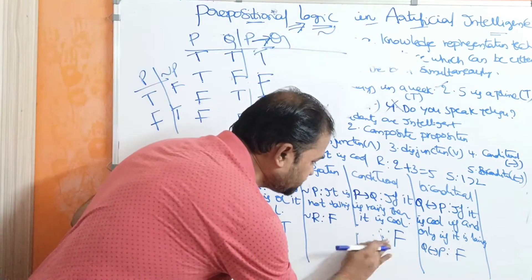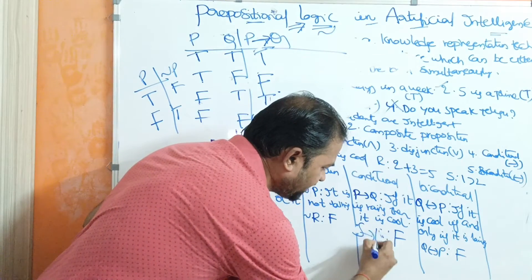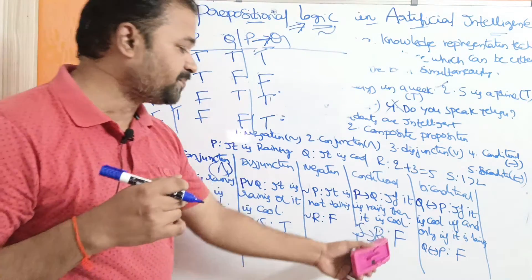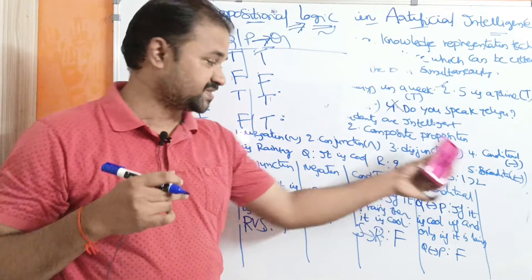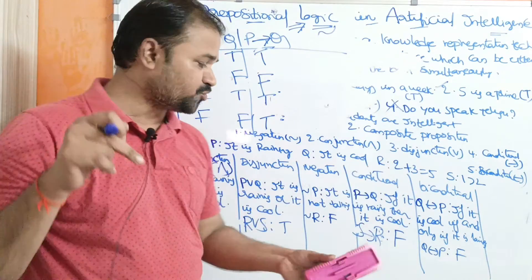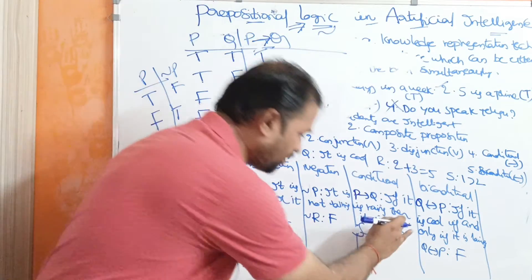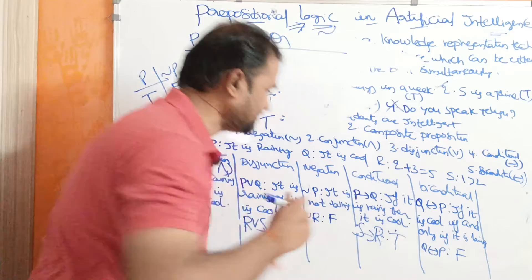Let us assume S → R as the proposition. S is false and R is true, so false → true = true. It returns true as the result.